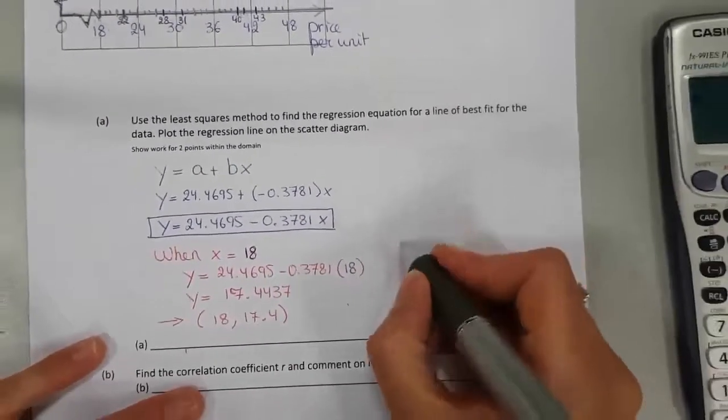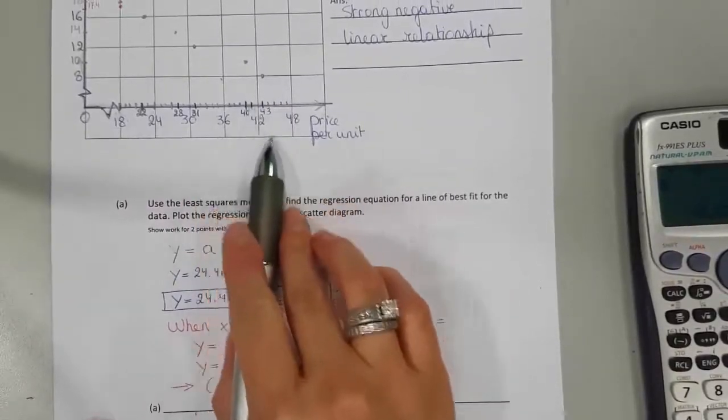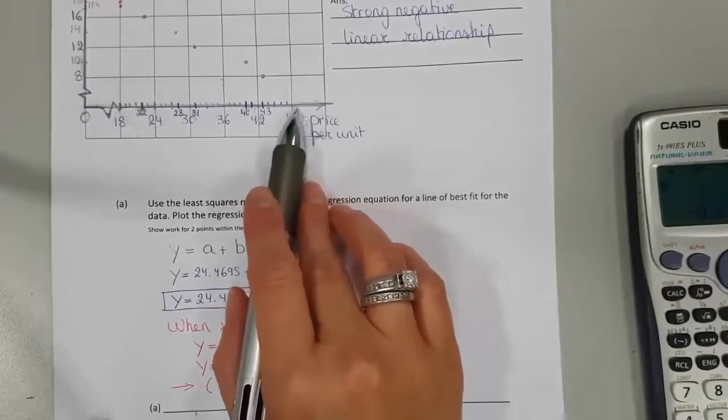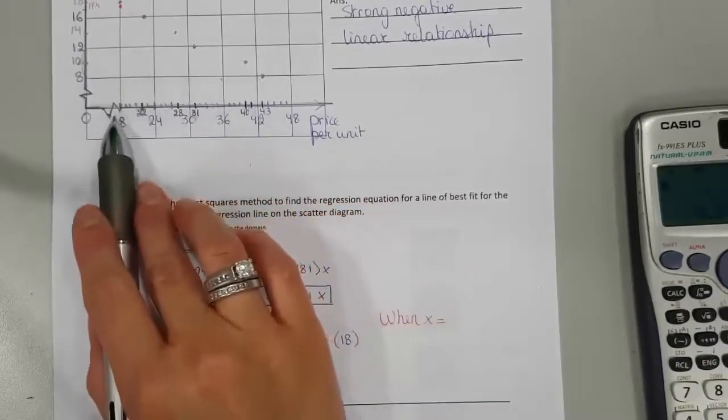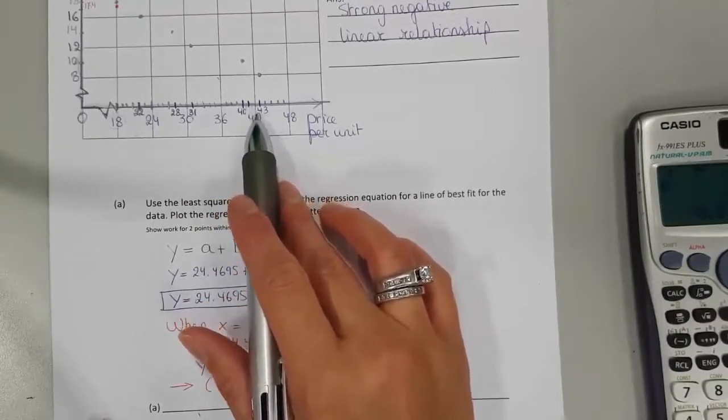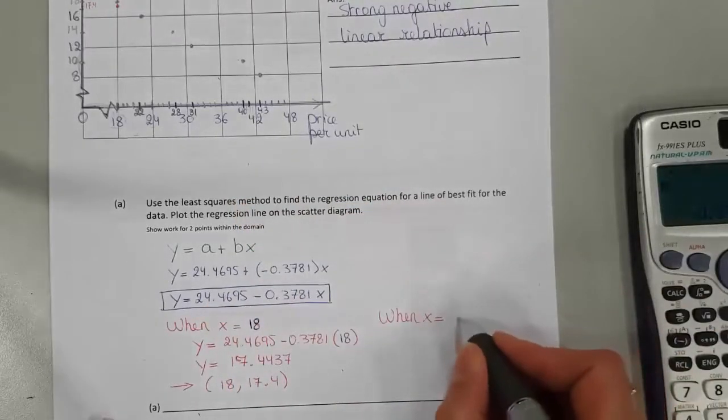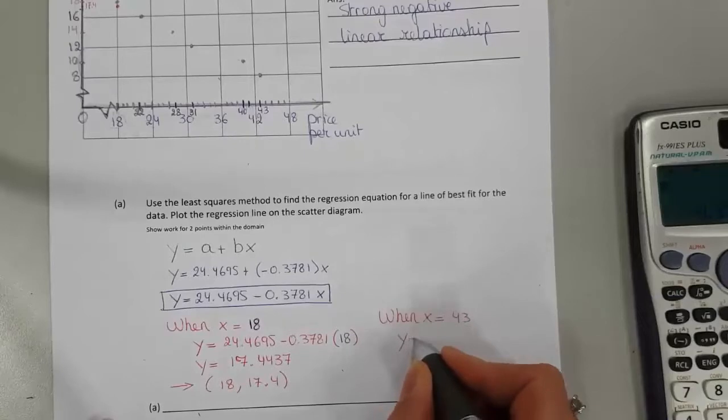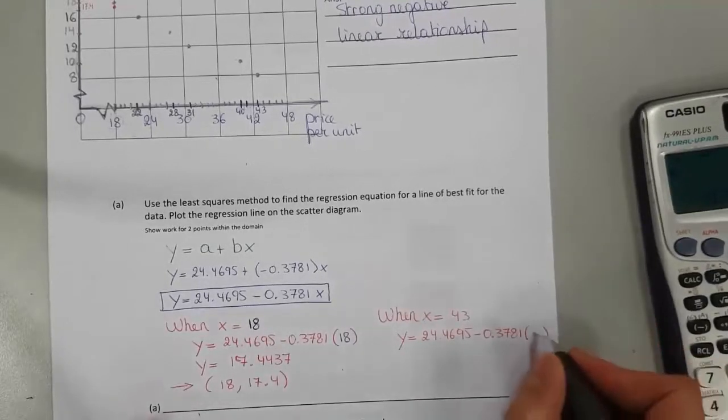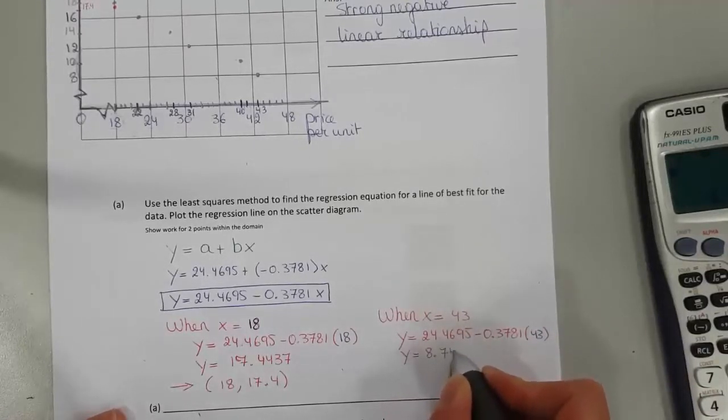Let's graph a second point as well. I want to use an x somewhere towards the end. I don't want to use too high values like 50, 51, those values are too high. I want to use values within this interval, within 18 and 43. I can use 42 or 43. How about we use 43? When x is 43, substitute this x into your equation. Instead of x, we're going to write down 43. And then you calculate your y belonging to that: 8.7474.